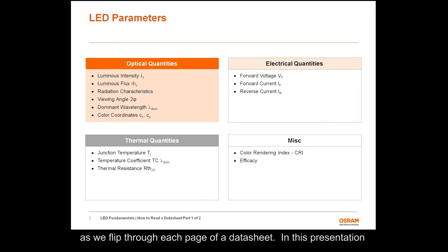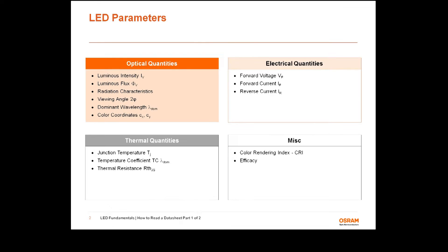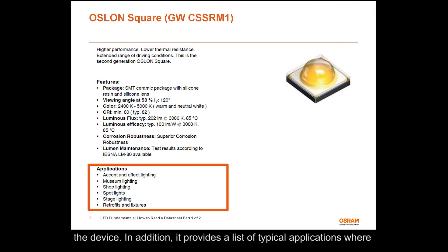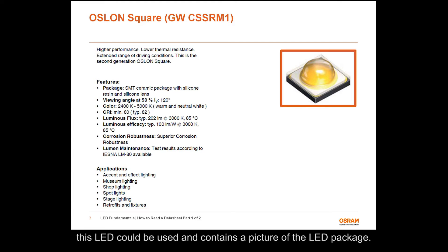In this presentation, we will look at the OSRAM square datasheet. Page 1 of the datasheet presents a summary of the key features of the LED. Common parameters such as luminous flux, luminous efficacy, and CRI are typically found on the first page so that the user can quickly understand the general performance of the device. In addition, it provides a list of typical applications where this LED could be used and contains a picture of the LED package.